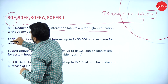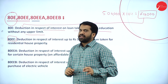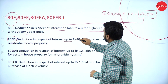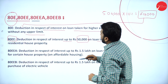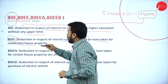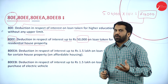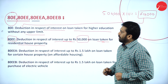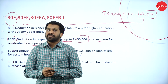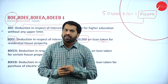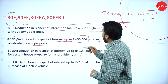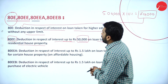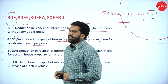Next is Section 80EE. Deduction in respect of interest up to rupees fifty thousand on loan taken for residential house purpose. So other than your normal deduction, we have 80EE also. If it is let out, the deduction is unlimited. But if it is a self-occupied residential house, up to fifty thousand interest can be taken as exemption.